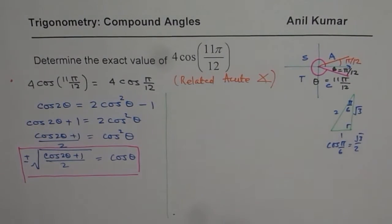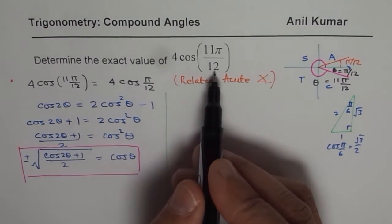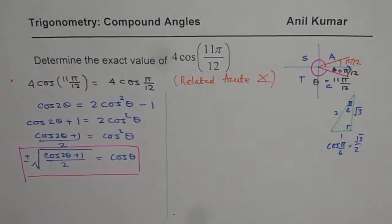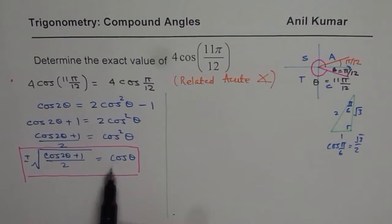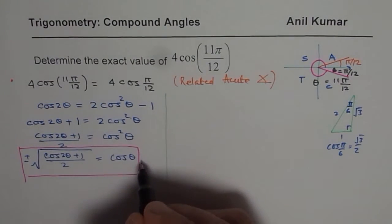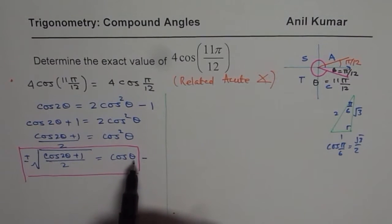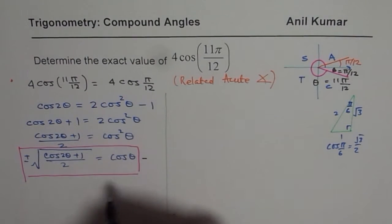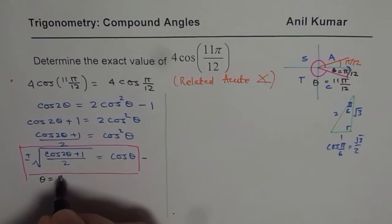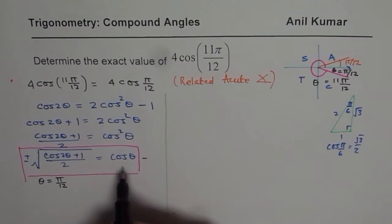So we can use that information to further solve and find the exact value of 4 cos 11π/12. You get the idea. So now what we will do is, we will use this formula. So that's the formula which we are going to apply. So if my theta is π/12, let us say if I write θ equals to π/12 in this equation, then what happens?